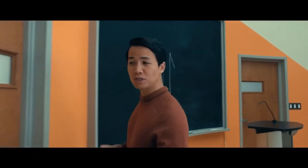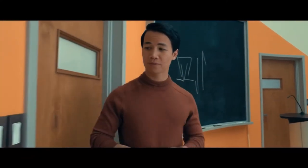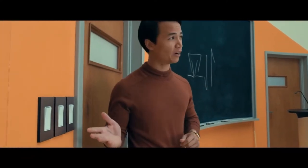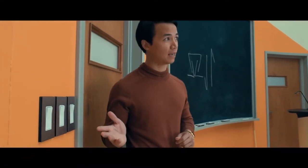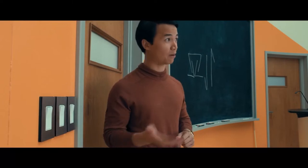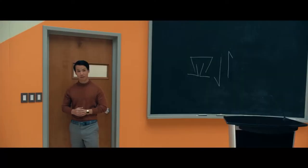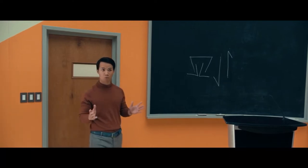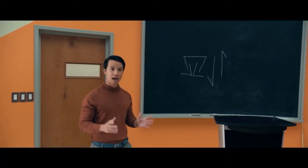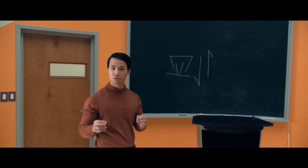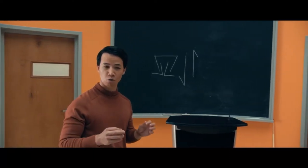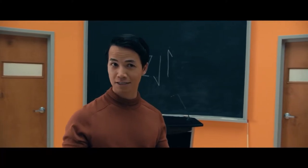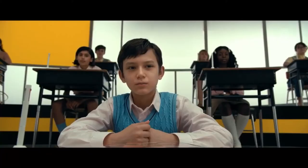There are three light switches on the wall, one of which activates the lamp in the classroom directly above us, which we obviously can't see from here. If you're only allowed to check up there once, how can you determine which switch activates the lamp?